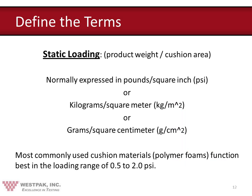Most commonly used cushion materials — polymeric foams — function best in the loading range of approximately 0.5 to 2 PSI, depending on your application. For example, a 20-pound product on a 100 square inch cushion gives 0.2 PSI. Halving the cushion area to 50 square inches gives 0.4 PSI. Increasing the product weight to 50 pounds on 50 square inches gives 1.0 PSI. Static loading is really quite simple.